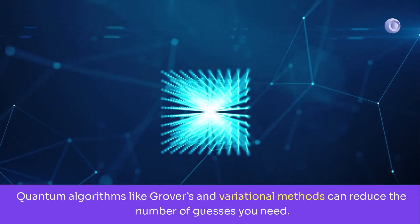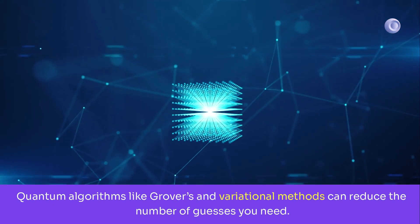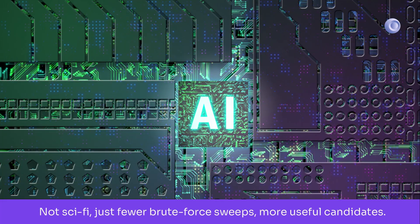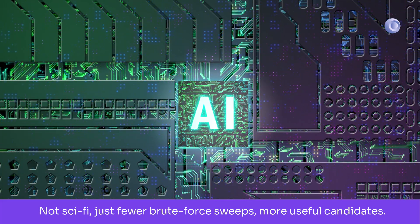Quantum algorithms like Grover's and variational methods can reduce the number of guesses you need. Not sci-fi, just fewer brute force sweeps, more useful candidates.